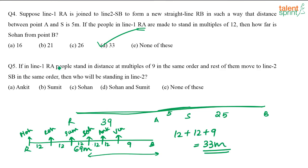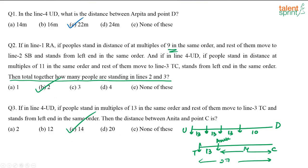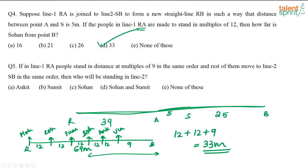If in line 1 RA people stand at multiples of 9 in the same order and the rest move to line 2 SB, we already established that 5 people stay in RA and Vineet moves to line 2. So who will be standing in line 2? Vineet will move. But Vineet is not among the options, so the answer is Option 5: None of these.